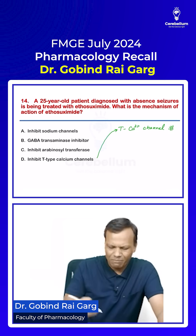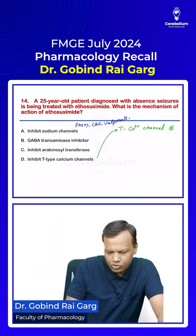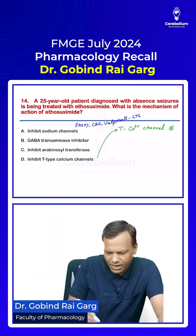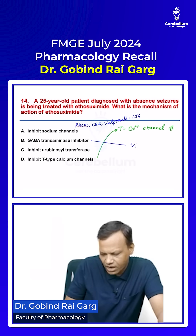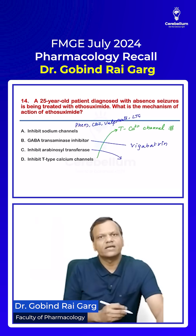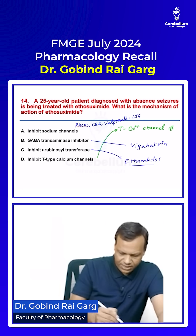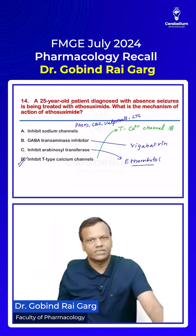Remember, sodium channels are inhibited by many drugs including phenytoin, carbamazepine, valproate, and lamotrigine. GABA transaminase inhibitor is vigabatrin. Ethambutol inhibits arabinosyl galactose synthesis and is used in tuberculosis — do not confuse ethambutol with ethosuximide. So the answer for ethosuximide is inhibition of T-type calcium channels.